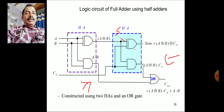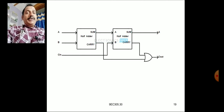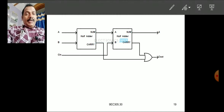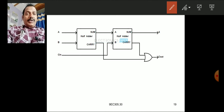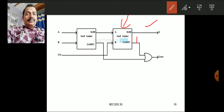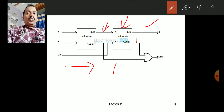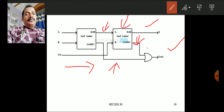For simplicity, without showing internal gates, you can draw two half adder blocks: the first takes A and B, generating a sum and carry. The second half adder takes the first sum and C_in, generating the final sum. The carry outputs from both half adders connect to an OR gate to produce C_out. This is the simplified block diagram of a full adder using two half adders and one OR gate.